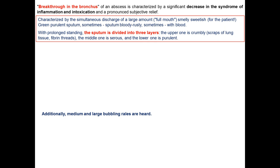Breakthrough is characterized by the simultaneous discharge of a large amount of foul-smelling sputum — sweetish, green, purulent sputum, sometimes bloody or rusty, sometimes with blood. After prolonged standing, the sputum divides into three layers: the upper layer consists of crumbly scraps of lung tissue and fibrin; the middle layer is serous; and the lower layer is purulent.